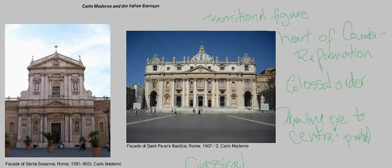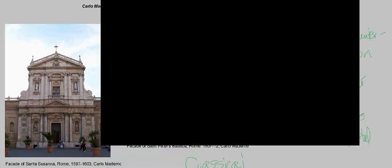Much like the sculpture we've already taken a look at of Baroque Italy, there's an interest in creating drama, dynamism, movement, and really engaging not just the space around it but the people who are looking at it. So keep this all in mind as we move forward, because these are themes of Baroque architecture in general.